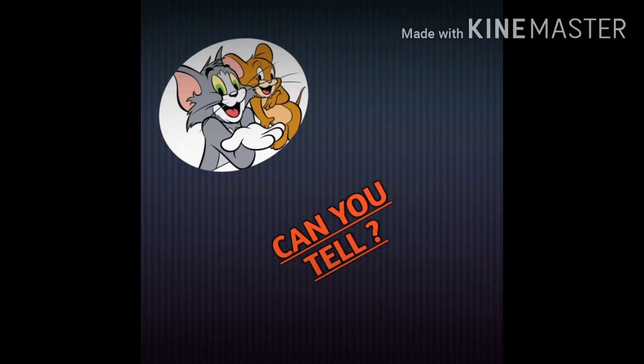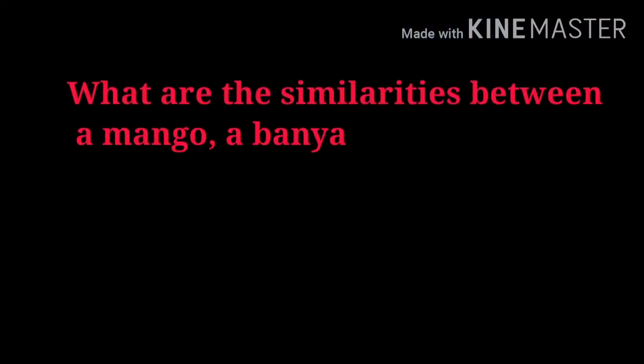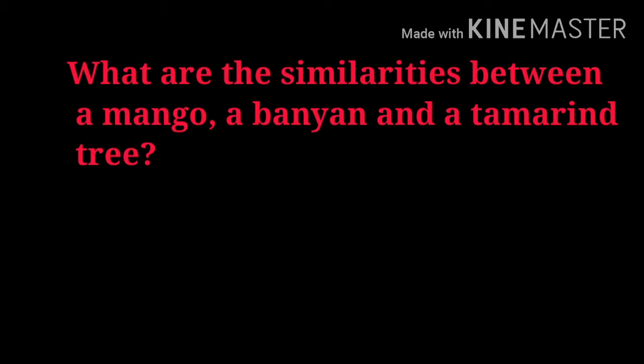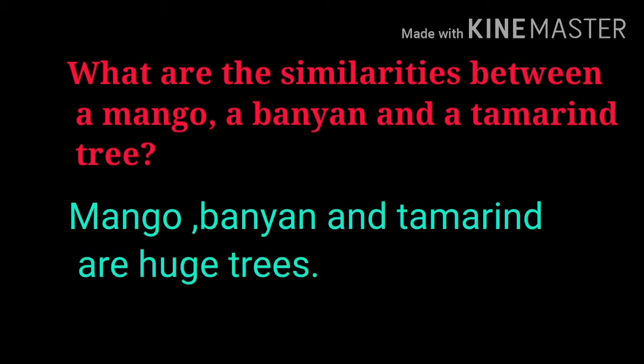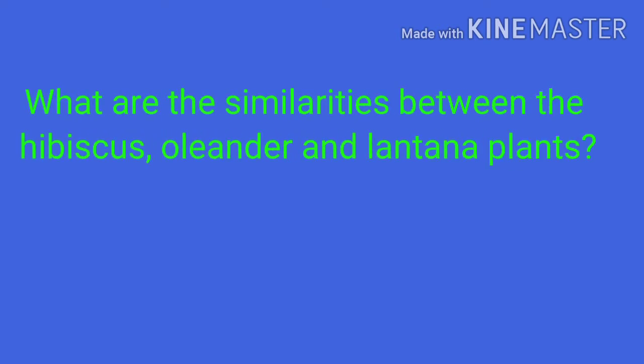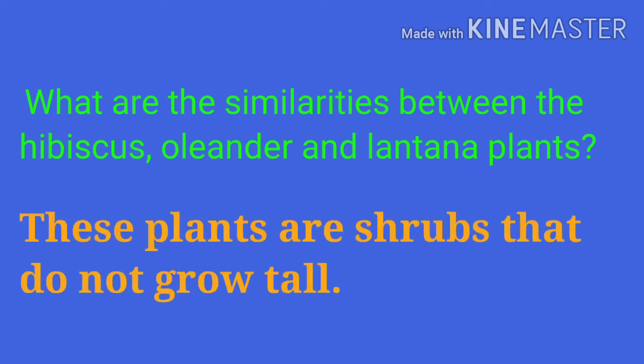What are the similarities between a mango, a banyan, and a tamarind tree? Mango, banyan, and tamarind are huge trees. What are the similarities between the hibiscus, oleander, and lantana plants? These plants are shrubs that do not grow tall.